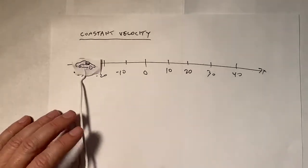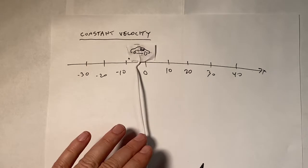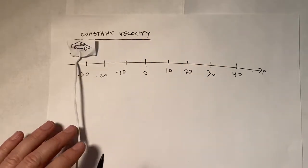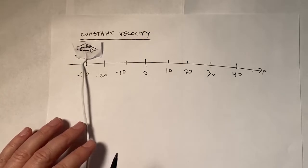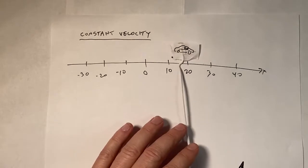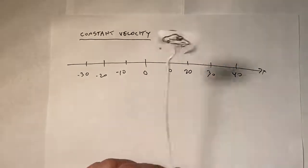Okay, so suppose that I want to describe the motion of this car as it moves along this x-axis. Let's say it starts right here, and then every second it moves 10 meters. So one, two, three, four, five. I wonder if I'm actually moving at a constant velocity. I think it's pretty close.